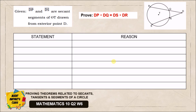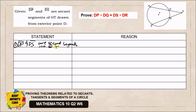These are the given. We are going to use DP and DS as the secants of the circle. Our first statement: DP and DS are secant segments of circle T, and they intersect at a certain point D. The reason for that is given. We are going to prove that the product of DP and DQ is equal to the product of DS and DR.